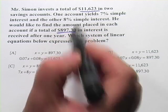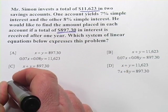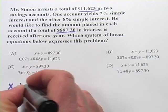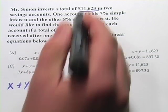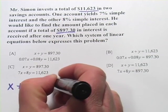So the first equation you're going to write here is the money he put into the first account plus the money he put into the second account is going to add up to $11,623.